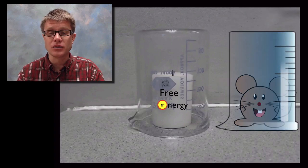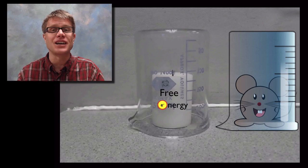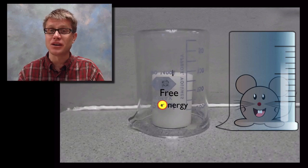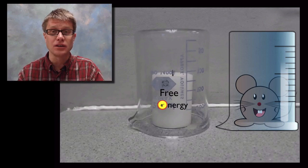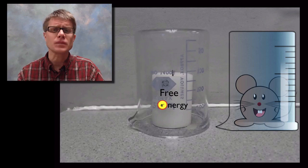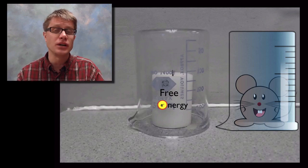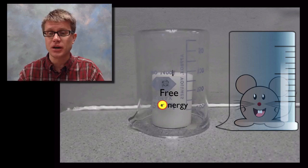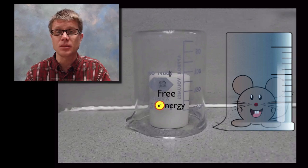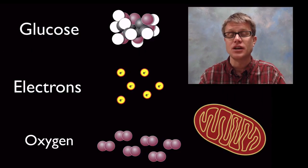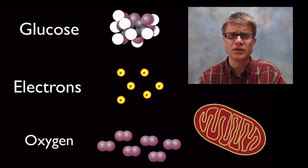If you were to cover a mouse with a beaker, it's going to go out just like the candle. Why? Because we're removing that oxygen — increasing carbon dioxide inside, decreasing oxygen — and eventually the mouse will die.